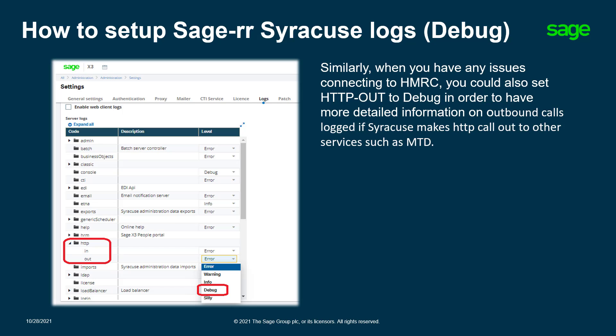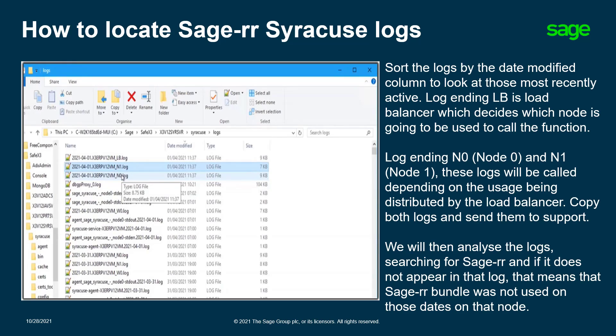Once we turn on the Sage RR Syracuse Logs, you can proceed with your VAT submission. Once you have attempted to complete your submission and have encountered an issue, you can go ahead and retrieve the logs for further information on what may be the cause of the problem.